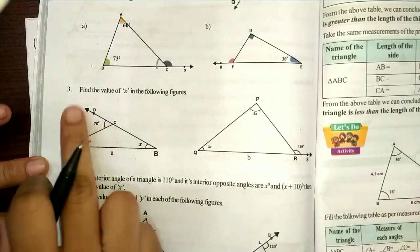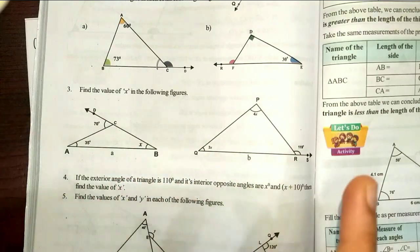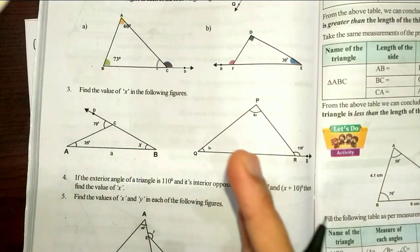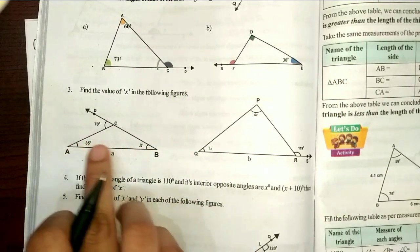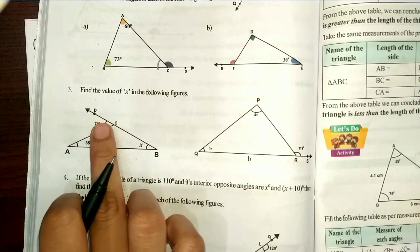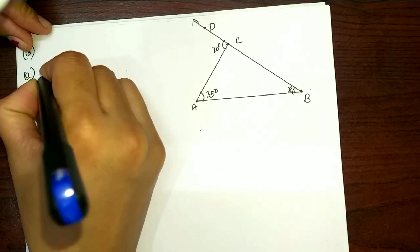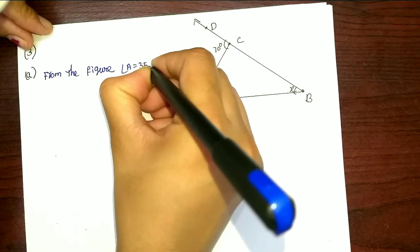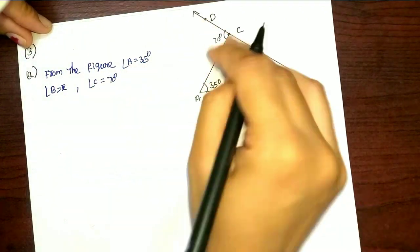Next we have the third problem: find the value of x in the following figures. Here we have x value to find out. We have two angles — exterior angles. The exterior angle of a triangle is equal to the sum of the opposite interior angles. From the figure, angle A equal to 35, angle B equal to x, and angle C equal to 70.